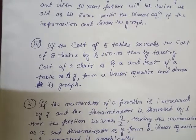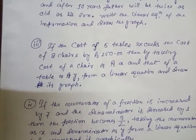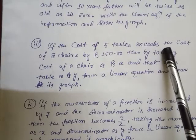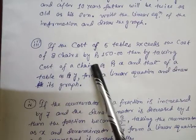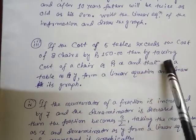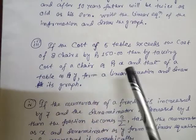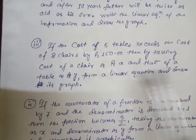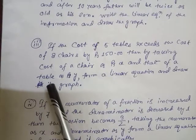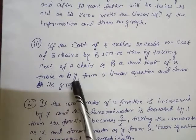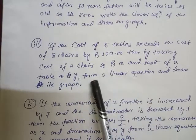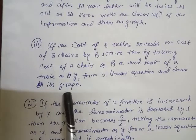Question number 7.013, Exercise 4.3, class 9, general maths. If the cost of 5 tables exceeds the cost of 8 chairs by 150, then by taking cost of a chair as rupees x and cost of a table as rupees y, form a linear equation and draw its graph.